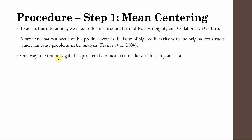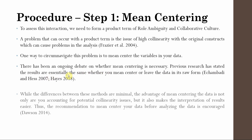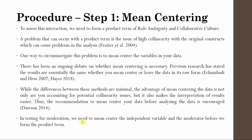One way to solve or circumnavigate this problem is to mean center the variables in your data. There has been an ongoing debate on whether mean centering is necessary. Previous research has stated the results are essentially the same whether you mean center or not. While the differences between these methods are minimal, the advantage of mean centering is that you are accounting for potential multicollinearity and it also makes interpretation of results easier. Thus, the recommendation to mean center your data before analyzing is encouraged. We need to mean center the independent variable and the moderator before we form the interaction term.